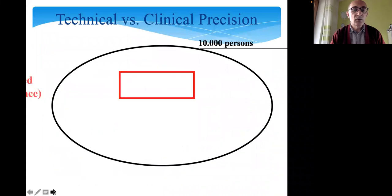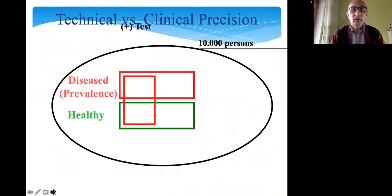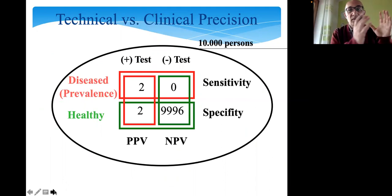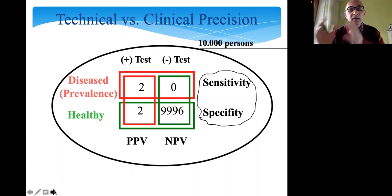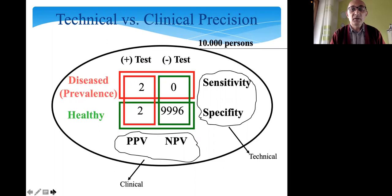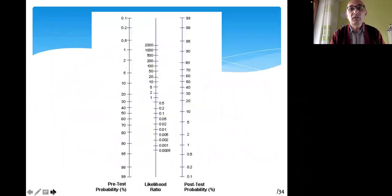Using this likelihood ratio with the Bayesian approach — combining pretest odds with the likelihood ratio — we are capable of calculating the positive predictive value. In this example, the positive predictive value was only 50%.